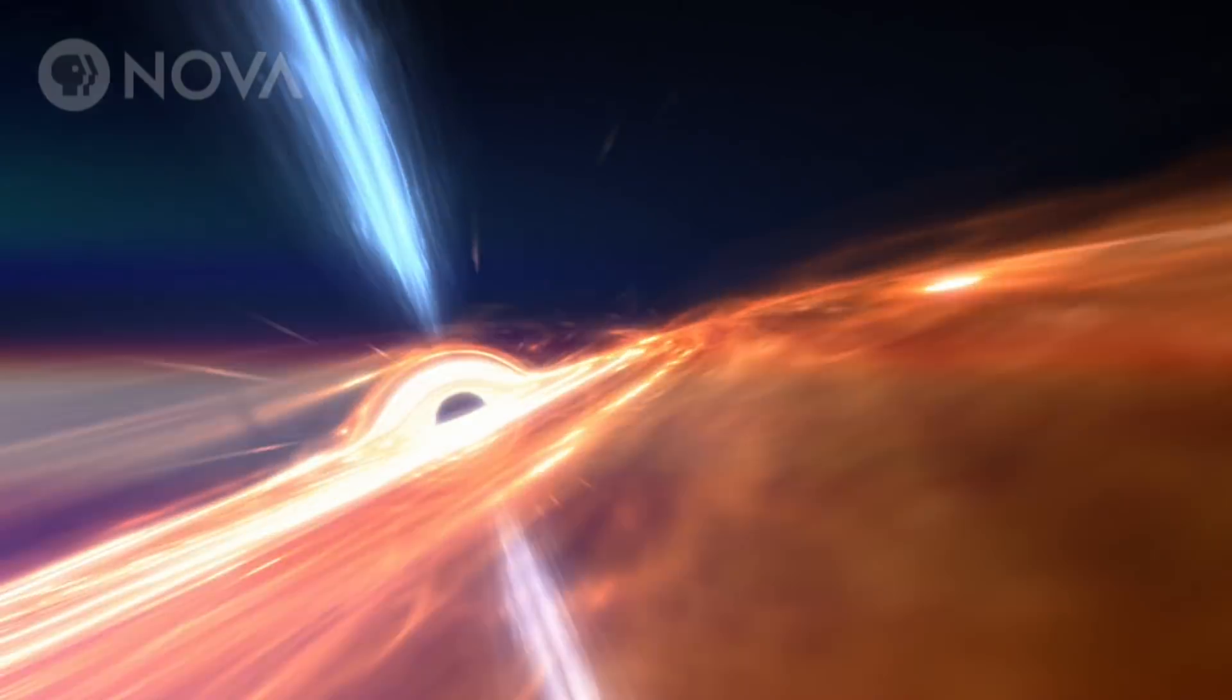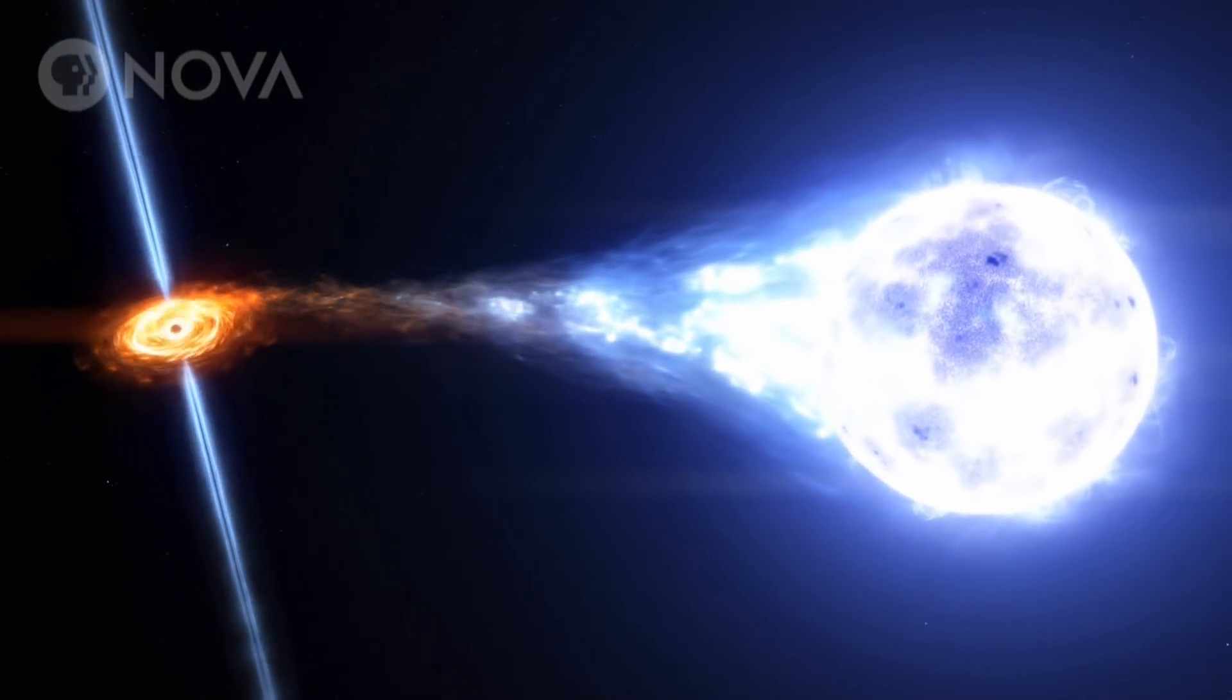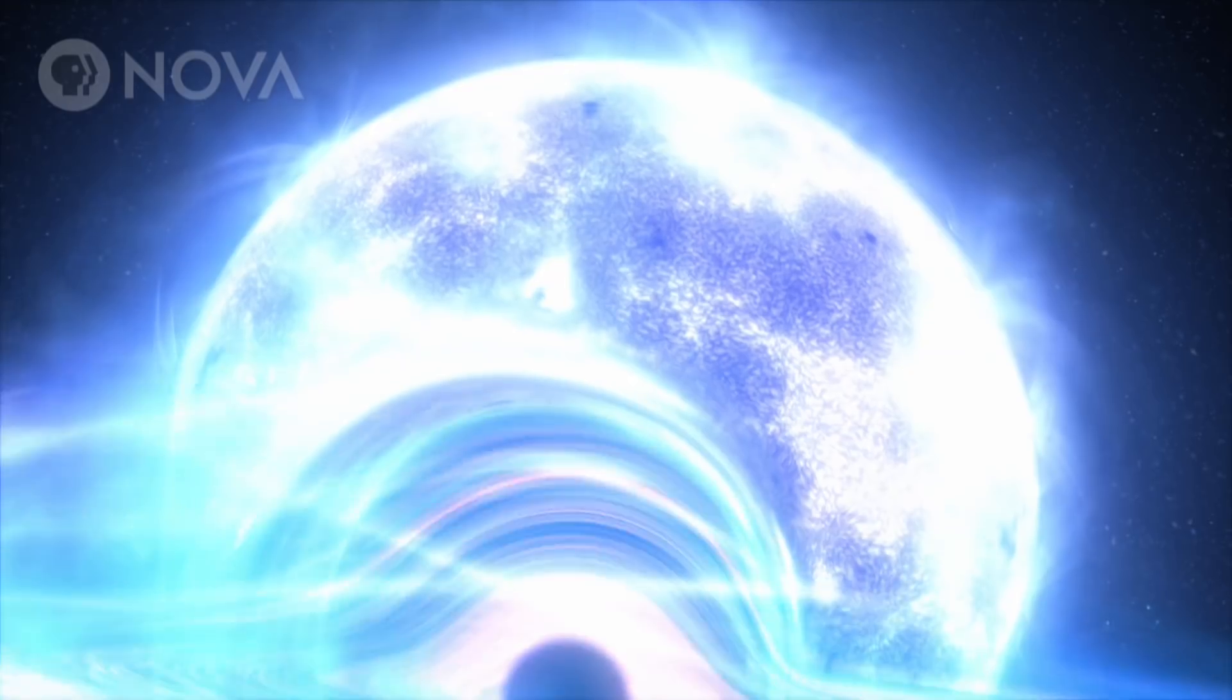A star that gets too close, what does the black hole do? It flays the outer layers. Ultimately devouring the entire star.